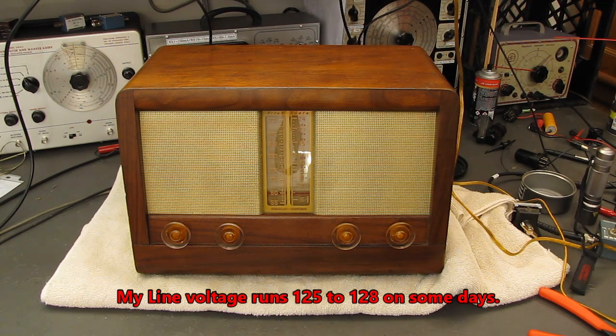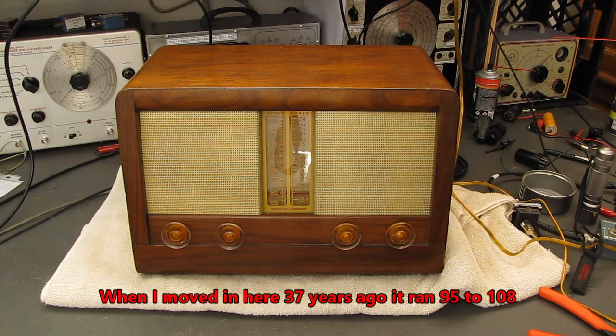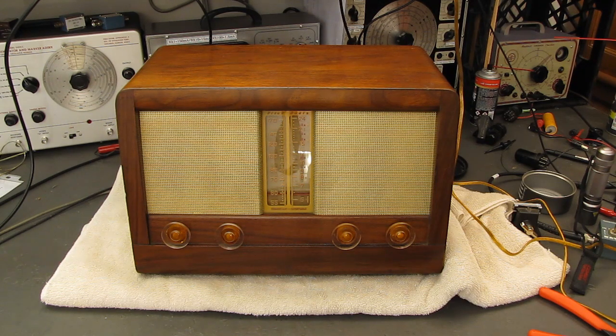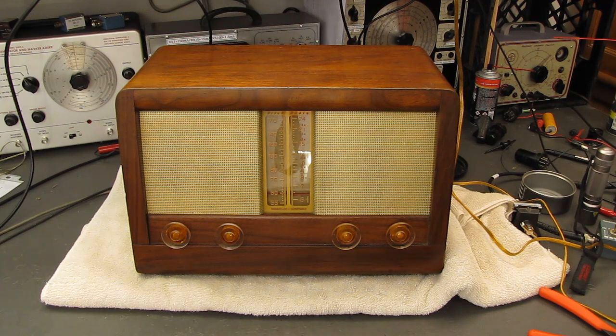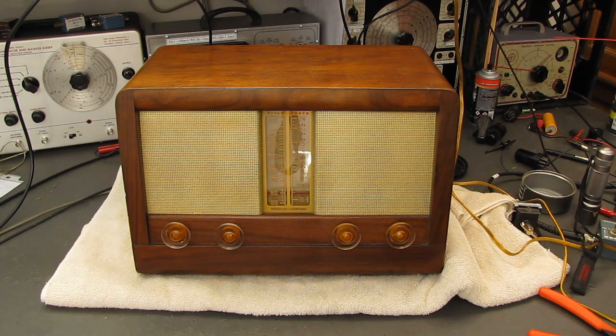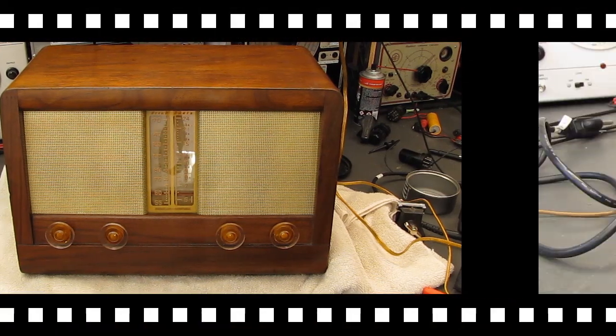But by putting the 50L6, it stresses the string a little bit less on modern 125 or 128 line voltage. These sets were initially built when the common voltage was 110, and over the years it snuck up to 115. Now most neighborhoods have between 125 and 127. Mine runs between 125 and 128. So I like to run the 50L6s in there and just take some of the stress off the tubes. Just my opinion. Let's move on.